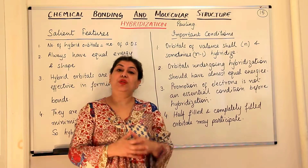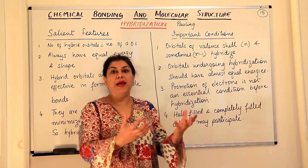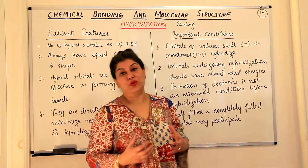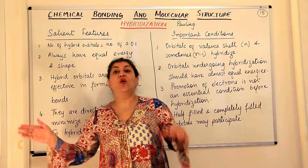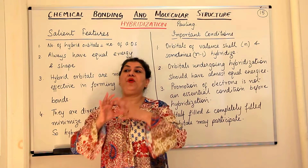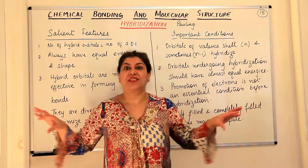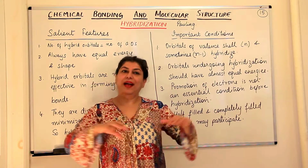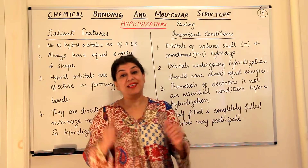We do the same thing with orbitals. When atoms are about to combine and form molecules, the orbitals in these atoms overlap and provide directional characteristics to the molecule. The S orbitals are spherical and the P orbitals are along the three X, Y, and Z axes.